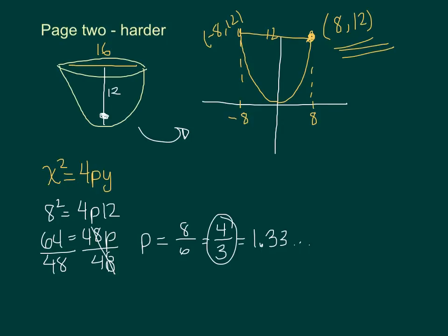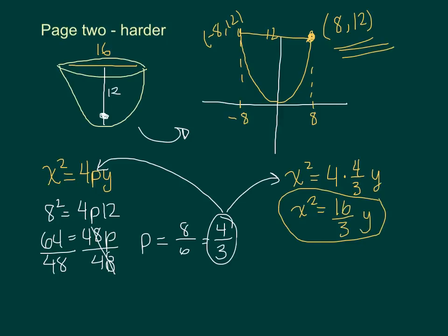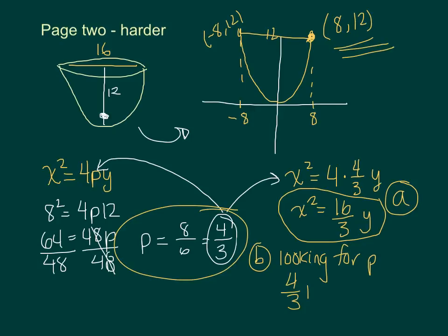So if I was going to write my equation, I'm going to use my fraction, so let's not use this decimal. Fractions are a little bit nicer in this equation. I've got x² = 4 times, well p was 4/3, so 4/3 y. I could make that look nicer and say x² = 16/3 y. So there's my answer to part a, my equation. In part b we want to know how far from the vertex is the filament. Well that's always just p, so it's 4/3 of an inch. So the light source is 4/3 of an inch from the vertex.